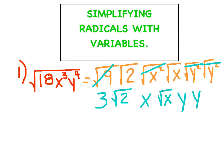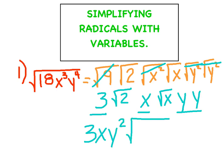Lastly, I'm going to take all the terms outside the radical and put them together. So I have a 3 and x, and a y times a y is y squared. Inside the radical, I'm going to keep the 2 and the x. And you've got your final answer.